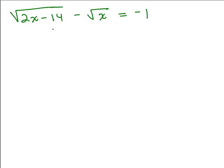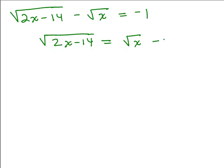To solve this radical equation, first we note that there are two square roots involved. So we want to begin by isolating one of the square roots. I think it's easiest to isolate the more complicated looking one. So I'm going to add the square root of x to both sides so that I have square root of 2x minus 14 on the left side of the equation, isolated. And on the other side, I'll have square root of x minus 1.